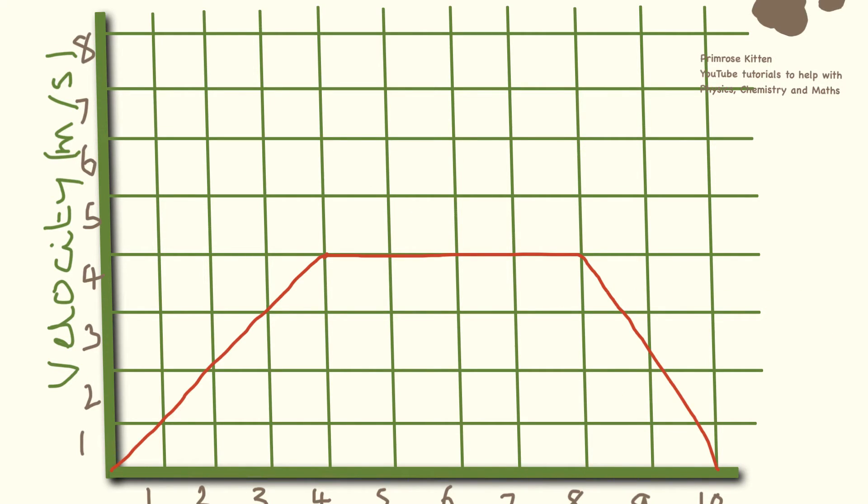This is a very typical sort of graph where we have three things happening: accelerating, steady speed, and then decelerating.